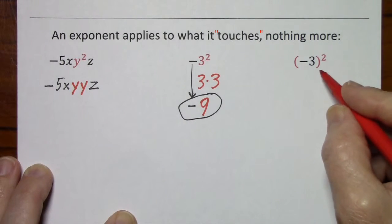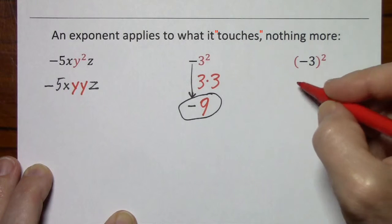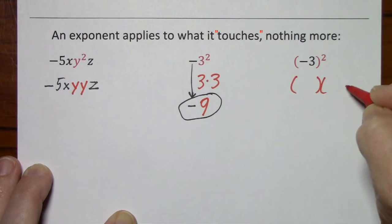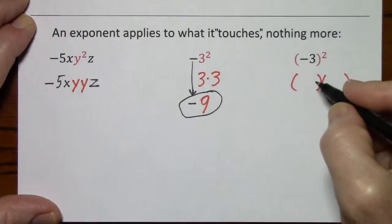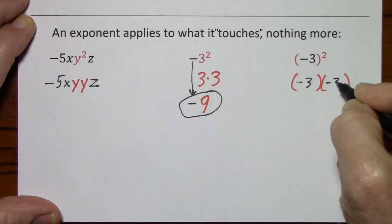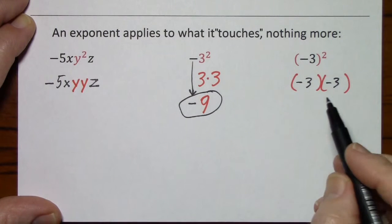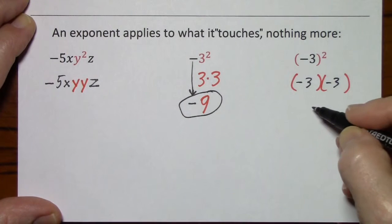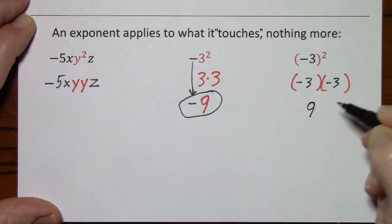However, in this case, the 2 is touching the parentheses. So you have two sets of parentheses, each with a negative 3. And negative 3 times negative 3 yields a positive 9.